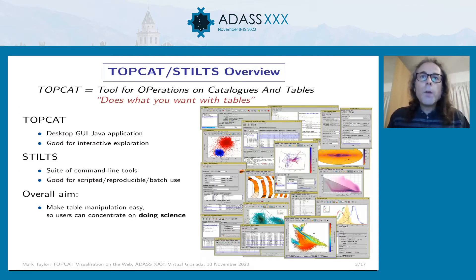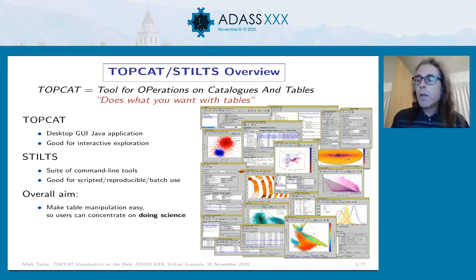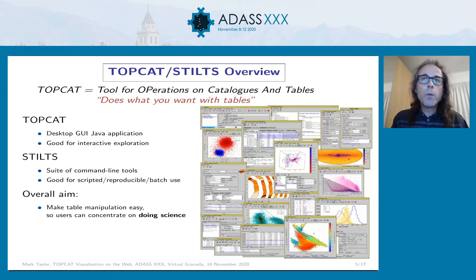For those of you who haven't come across it, TopCat is a desktop Java GUI application which works with tabular data — that typically means source catalogues, though it can be other things. It does various things you need to do with tables: cross-matching, row selections, column manipulations, talking to external services, and so on. Its basic mission is to do all the boring mechanical things that astronomers need to do with tables, so they can concentrate on astronomy rather than moving numbers from one place to another. It also comes with an associated package called STILTS which does all the same things from a command-line context.